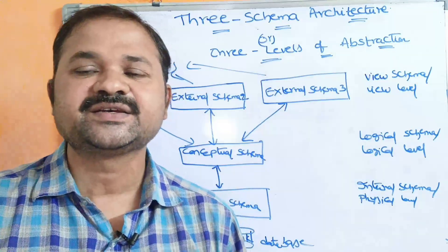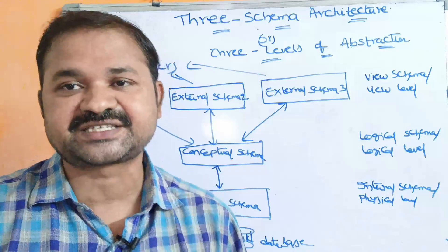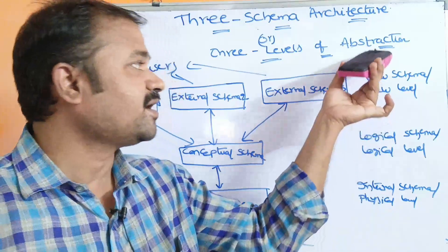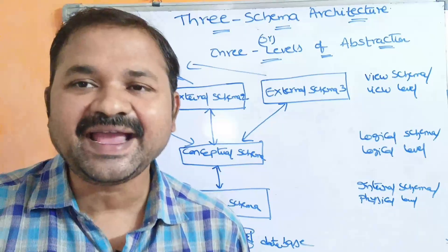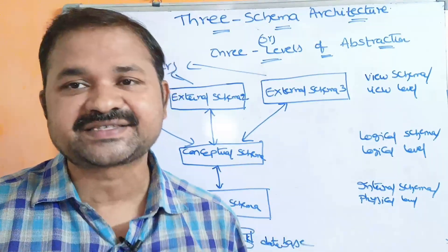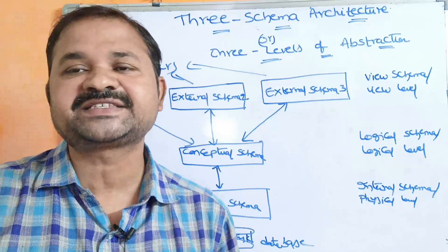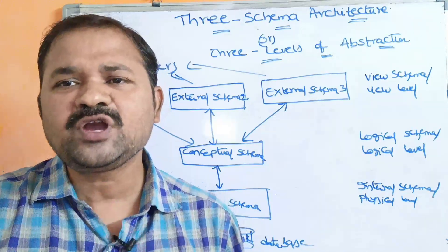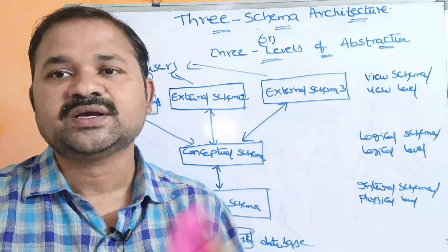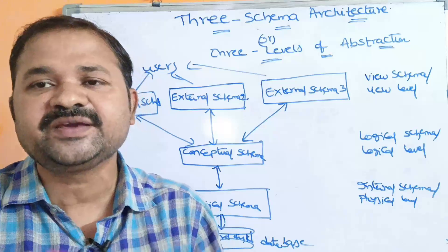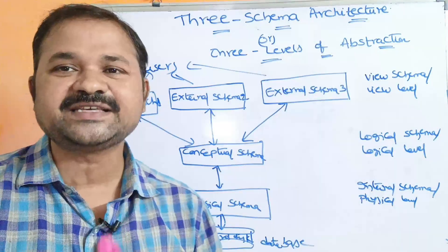Abstraction means representing or showing essential features — showing an abstract view of data and hiding unnecessary details and hiding the background details. So only the information which is needed for the user will be visible to the user. This is what abstraction means.